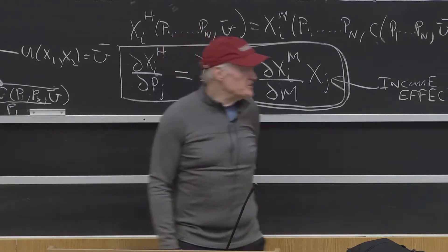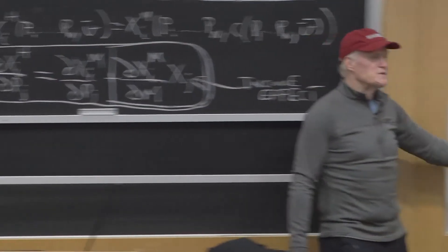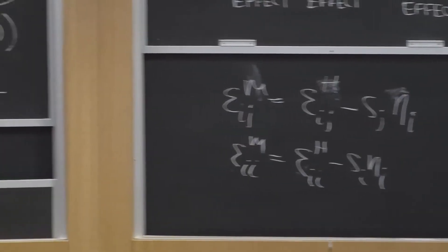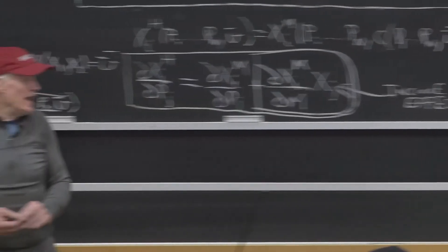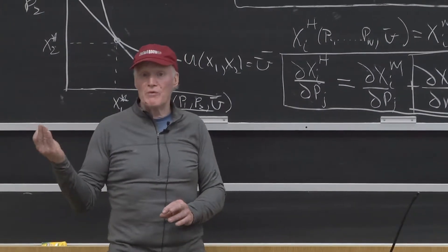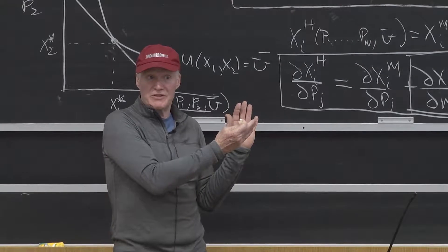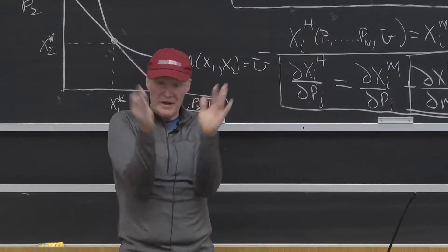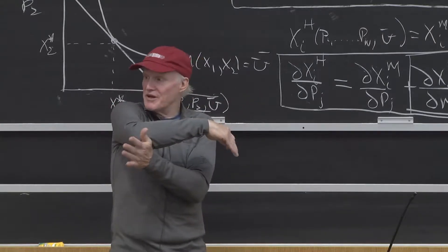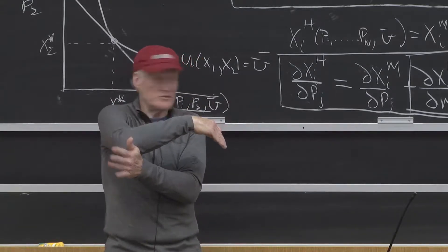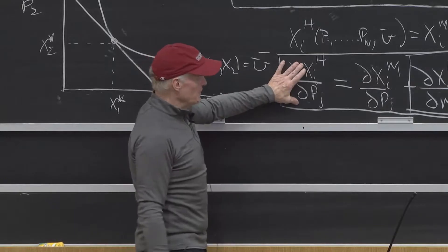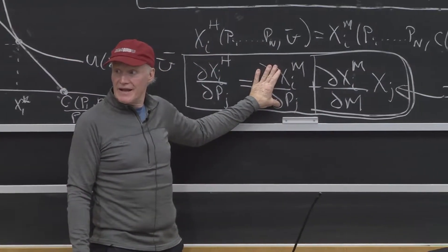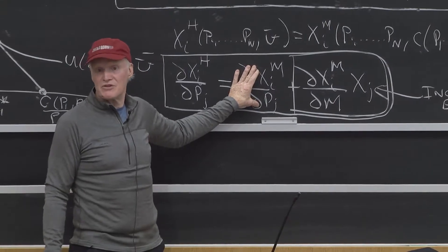For each of those conditions on the Hicksian system, there are corresponding conditions on the Marshallian system. They're not identical, but they're corresponding. If you want to go from one to the other, one way to do it is to use the Slutsky equation. Just take each of those restrictions for the Hicksian system, impose the Slutsky equation, and it'll give you a condition in terms of the Marshallian system. Just use this formula and substitute this in every place we had a Hicksian term and then put everything in Marshallian terms.